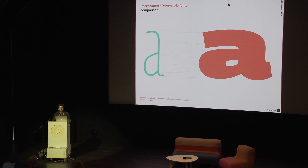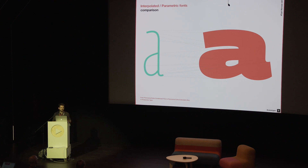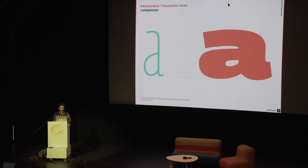How do parametric fonts and interpolated fonts compare? The biggest advantage of interpolated fonts is that they can be produced with the tools and knowledge that type designers already possess. However, you have to respect certain rules: you have to design many different masters — as many masters as interpolation axes you want to offer — and for each glyph it needs to have the same number of points and same direction of contours across the different masters. Not only do you need to draw many masters, but if you want to make a stylistic change to your family, you need to make that change across all the different masters.